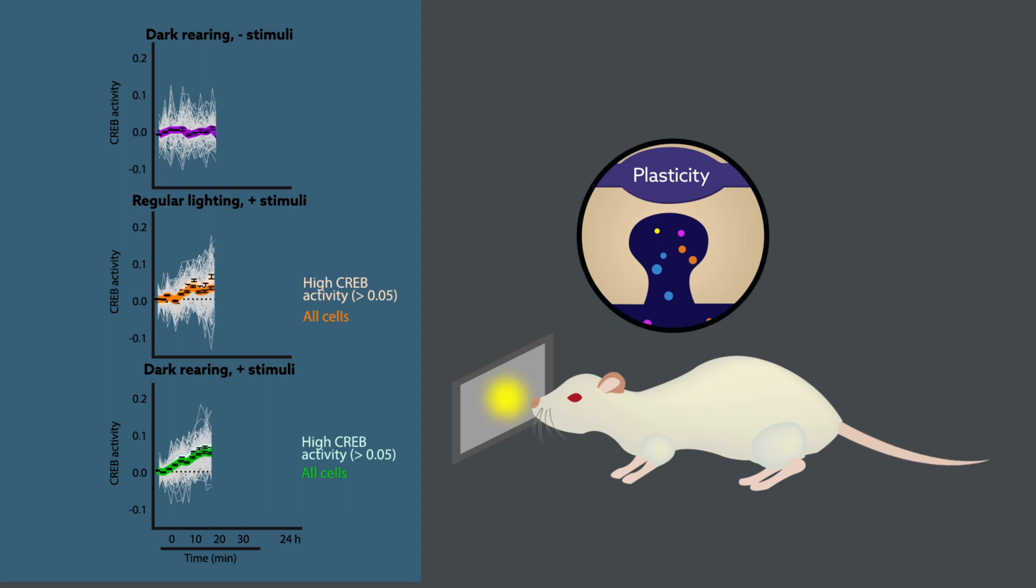This new approach enabled to precisely measure how sensory experience affects neuronal activity and CREB activity in the same cells. Our results show that experience can shape the interplay between CREB and neuronal activity, rather than simply elevating neuronal activity by itself.